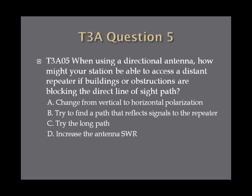Question 5: When using a directional antenna, how might your station be able to access a distant repeater if buildings or obstructions are blocking the direct line of sight path? A. Change from vertical to horizontal polarization. B. Try to find a path that reflects signals to the repeater. C. Try the long path. Or D. Increase the antenna SWR.